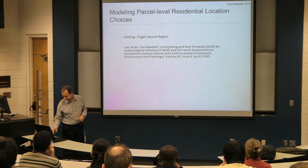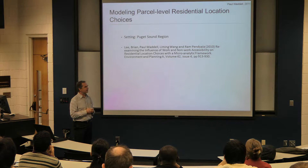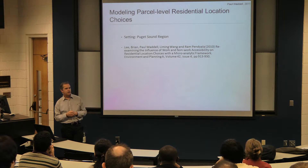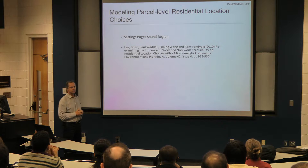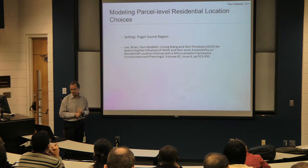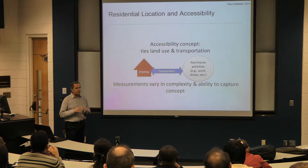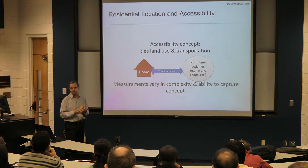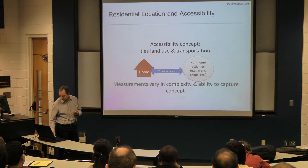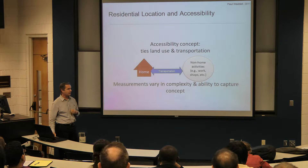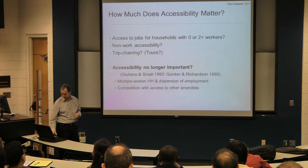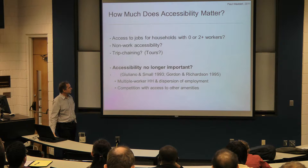I'll transition to a brief discussion of one application — a residential location model component that applies modeling at a parcel level. This was done with Brian Lee, a former PhD student now at the University of Vermont, and Ron Pinnella at Arizona State. Accessibility is really the connecting glue between land use and transport, and between the modeling of those things. We're trying to focus on how to measure different kinds of accessibilities and figure out how important they are — in this case, for the residential location choice.